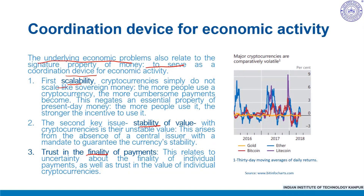First, scalability: cryptocurrencies simply do not scale like sovereign money. To live up to their promise of decentralized trust, cryptocurrencies require each and every user to download and verify the history of all transactions ever made. With every transaction adding a few hundred bytes, the ledger grows substantially over time. To keep the time needed to verify all transactions manageable, cryptocurrencies have hard limits on throughput. The issue extends to processing capacity, where only supercomputers could keep up with verification of incoming transactions, and the associated communication volumes could bring the internet to a halt as millions of users exchange files on the order of magnitude of a terabyte.